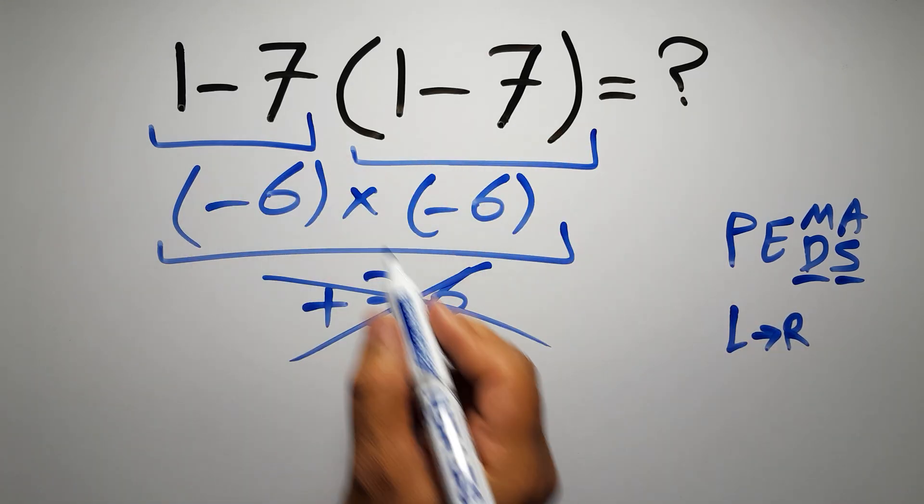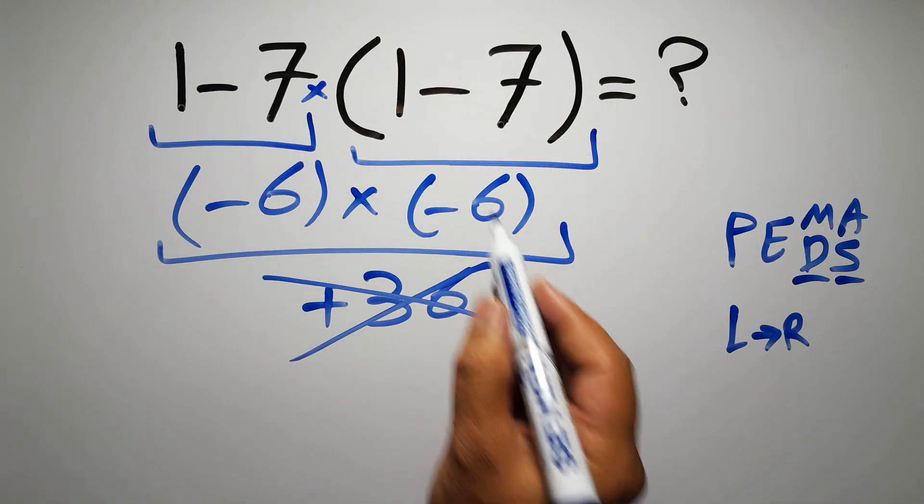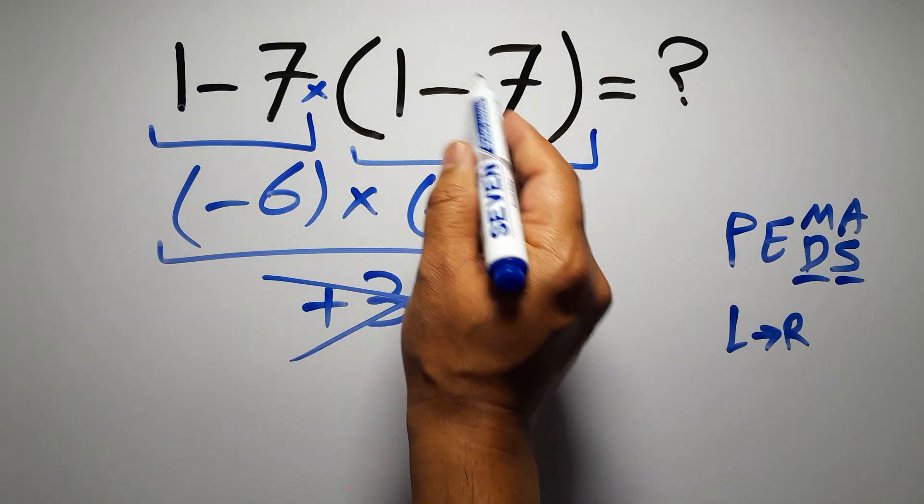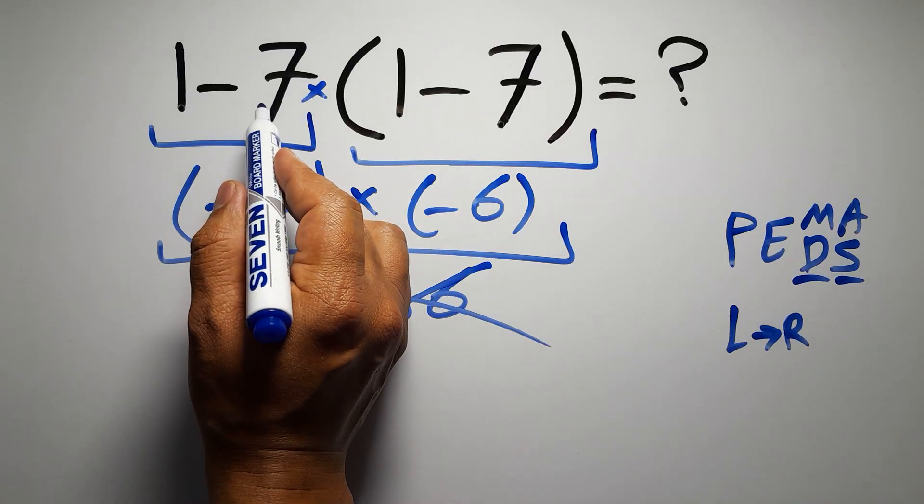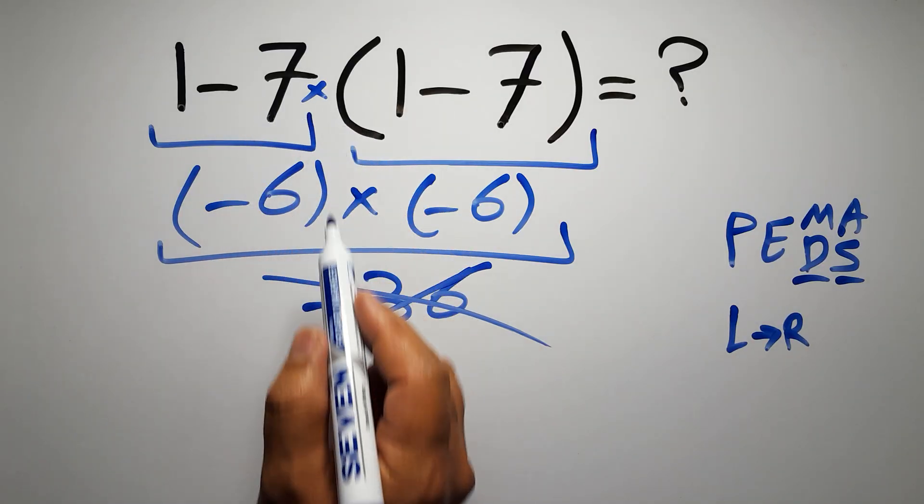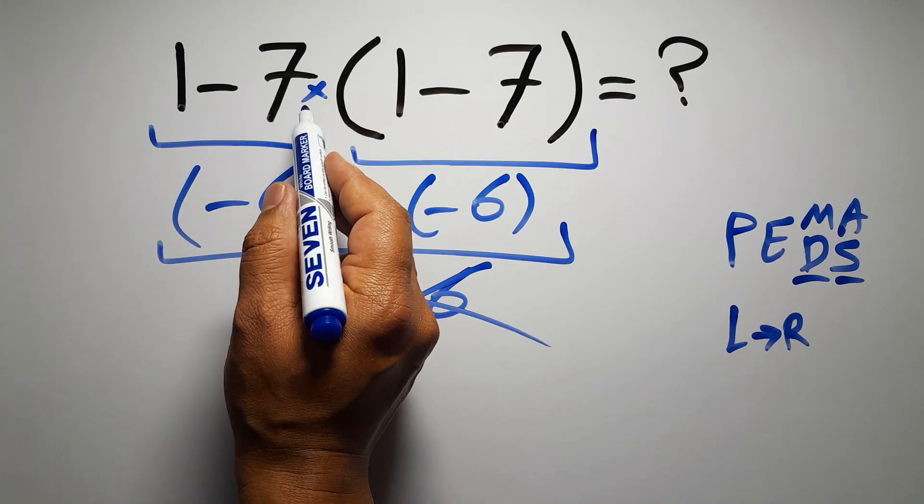In this expression we have 1 subtraction, 1 multiplication, and 1 parentheses. Inside these parentheses we have 1 subtraction. Here we have a multiplication because in mathematics when a number is placed next to parentheses it means multiplication and we usually don't write a multiplication sign for brevity.